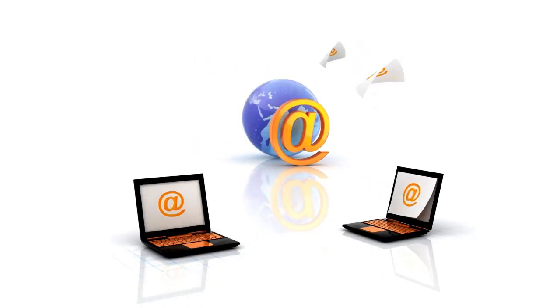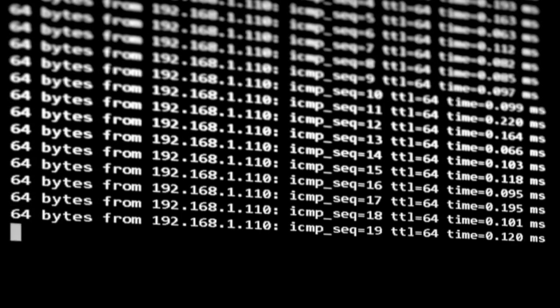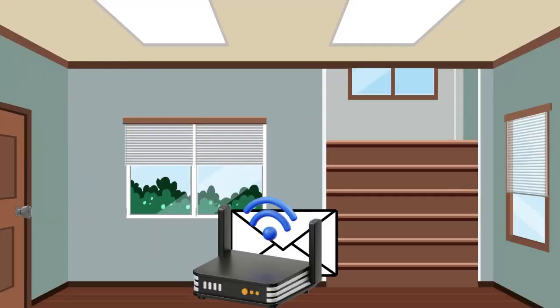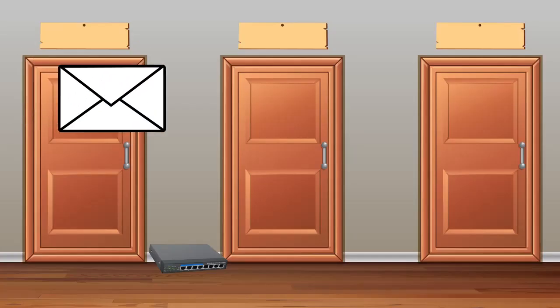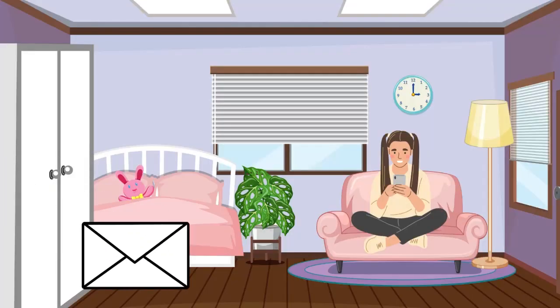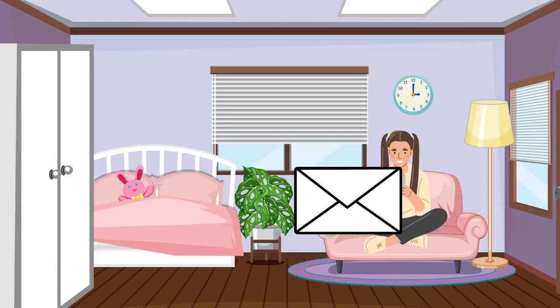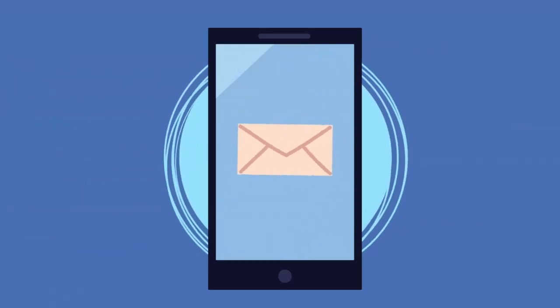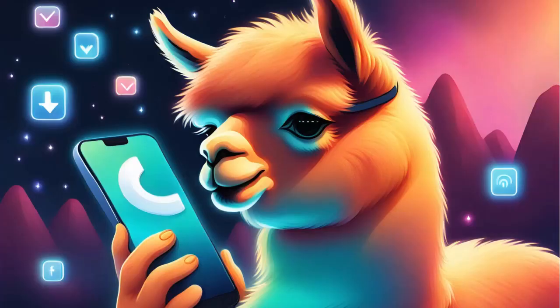Now let's talk about how information travels from one place to another on the internet. It's a bit like sending a letter — your device breaks the information into tiny pieces called data packets and sends them on a journey through the internet. Along the way, they pass through routers, switches, and other devices that help them find the fastest route to their destination. It's like a giant highway system for information!